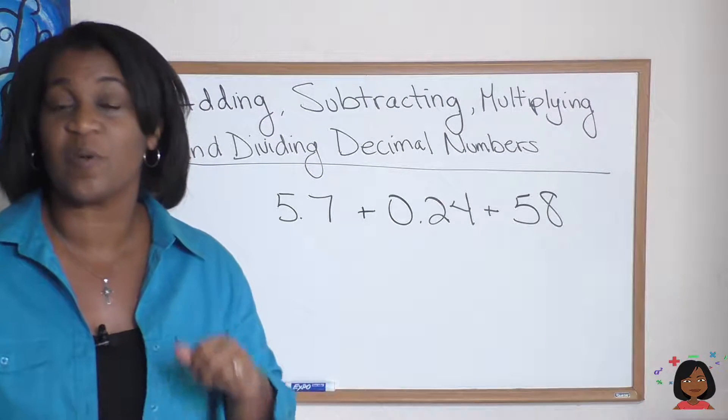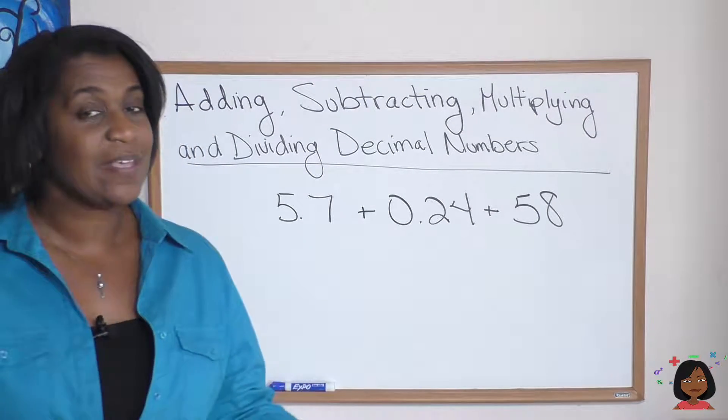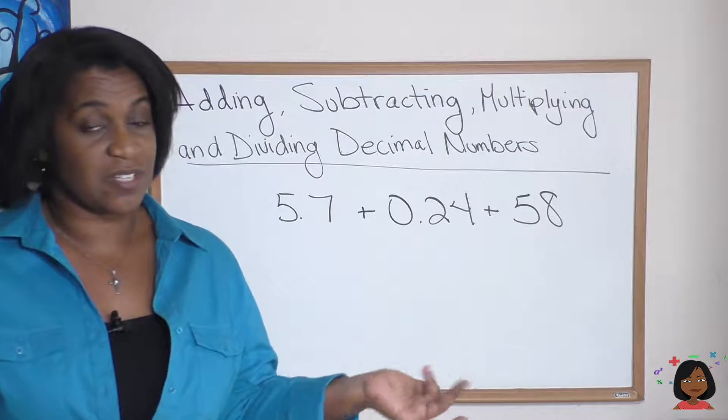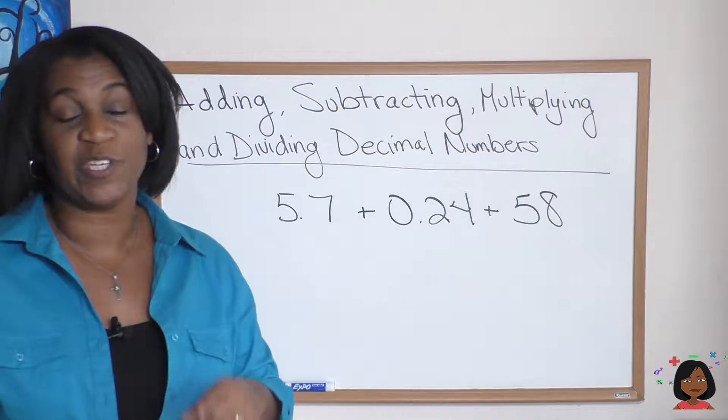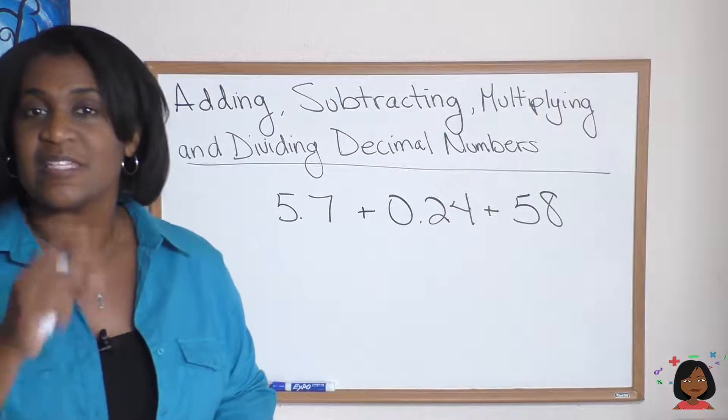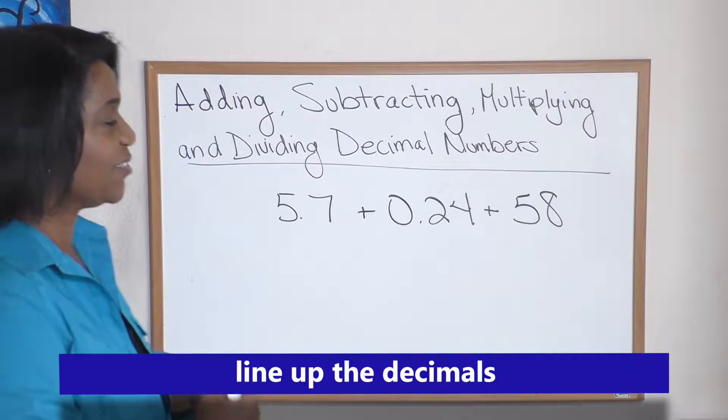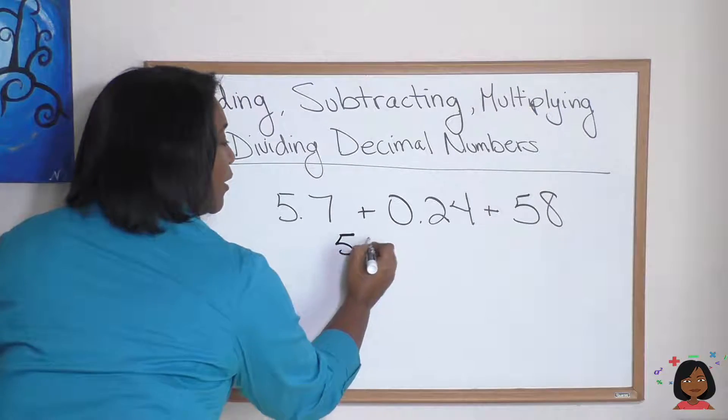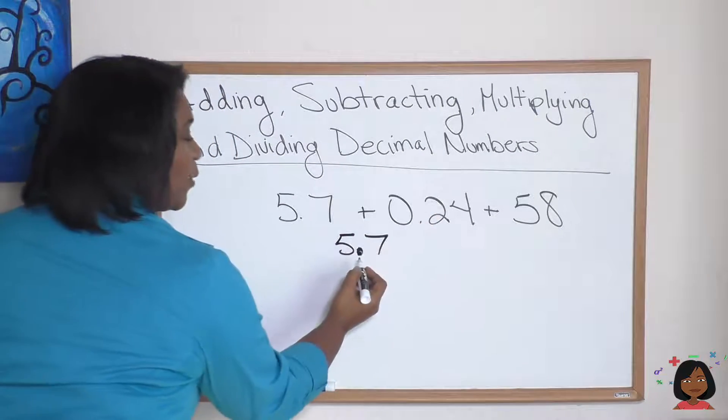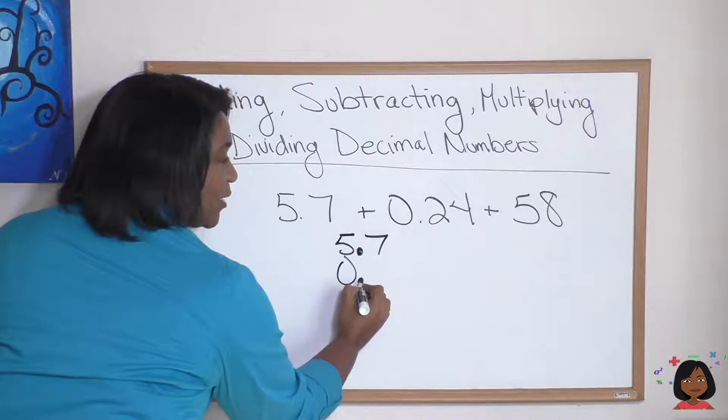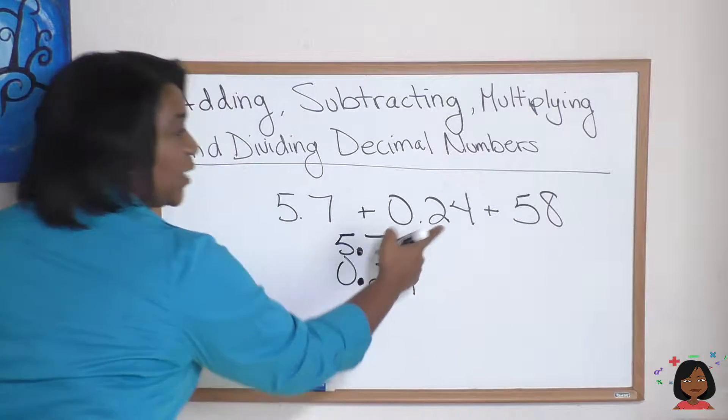Let's first start with an addition problem with decimal numbers. Basically, adding is just the same, but the one key thing when you are adding decimal numbers is that you line up your decimals. Let's do it. We're going to line up our 5.7, and now we're going to put our 0 and there's my decimal, 2, 4, and now I'm going to add my 58.